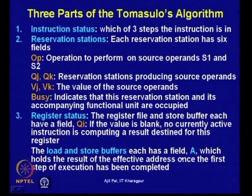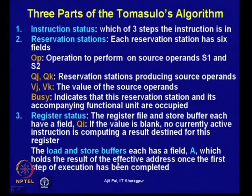The load and store buffers each have a field A, which holds the result of the effective address once the first step of execution is complete. The load/store buffer initially takes information from the instruction register as the instruction is fetched, then calculates the effective address by adding the program counter value with the offset in the instruction, storing the result in the load/store buffer.